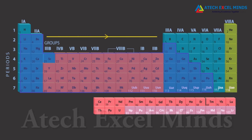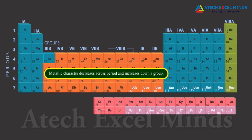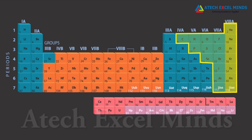Metals are electropositive as they tend to lose electrons. As effective nuclear charge acting on valence shell electrons increases across a period, the tendency to lose electrons decreases. Down the group, nuclear charge decreases because outermost electrons are far away from the nucleus and can be lost easily. Therefore, metallic character decreases across a period and increases down a group.